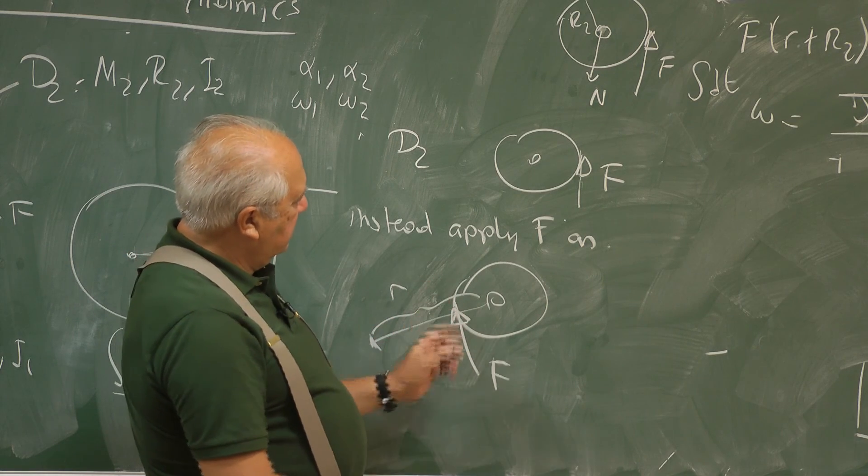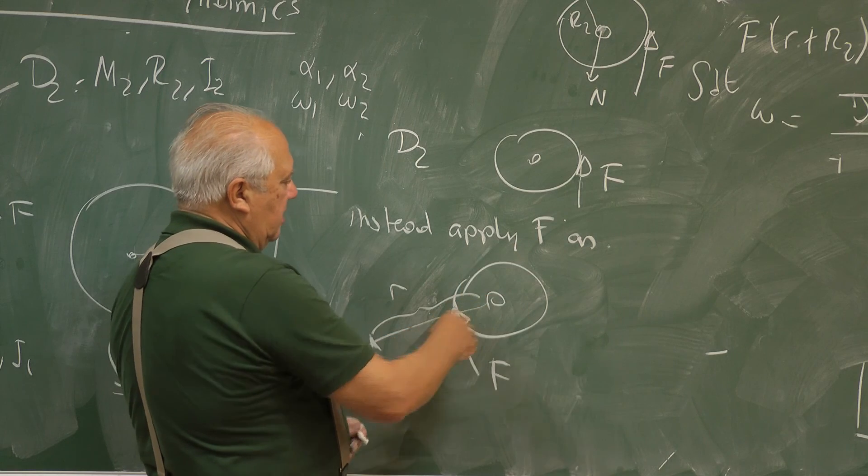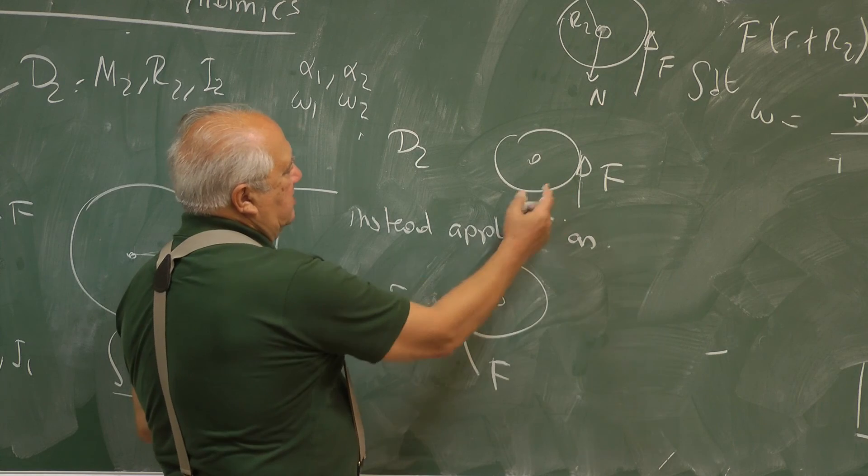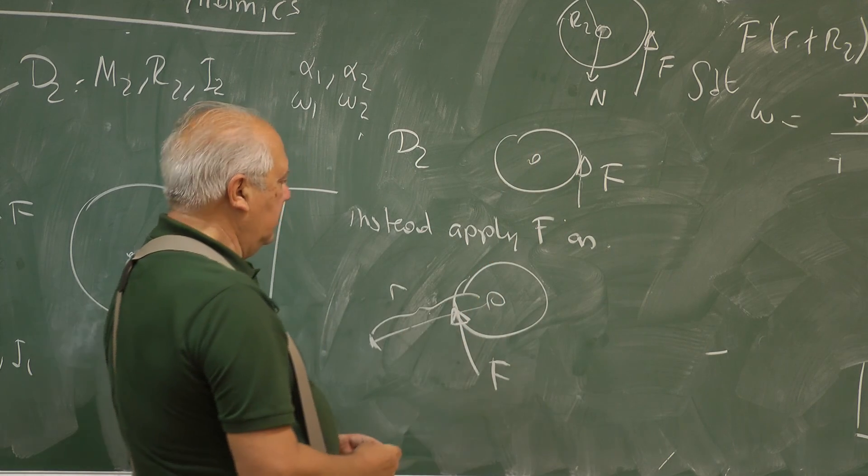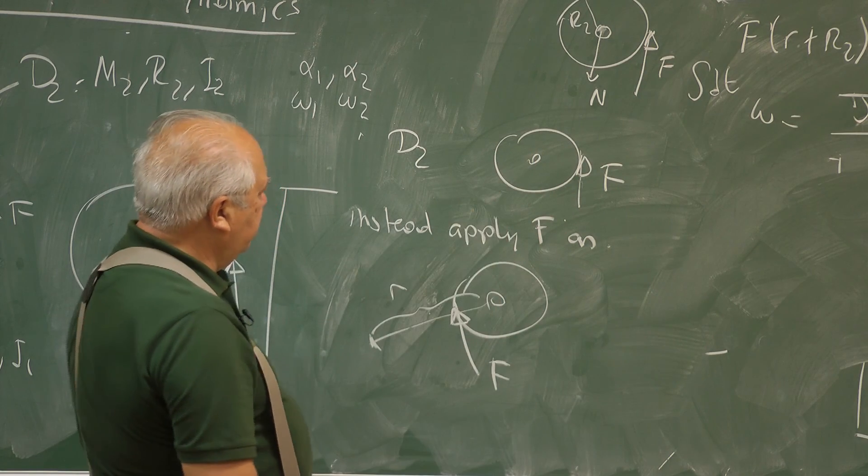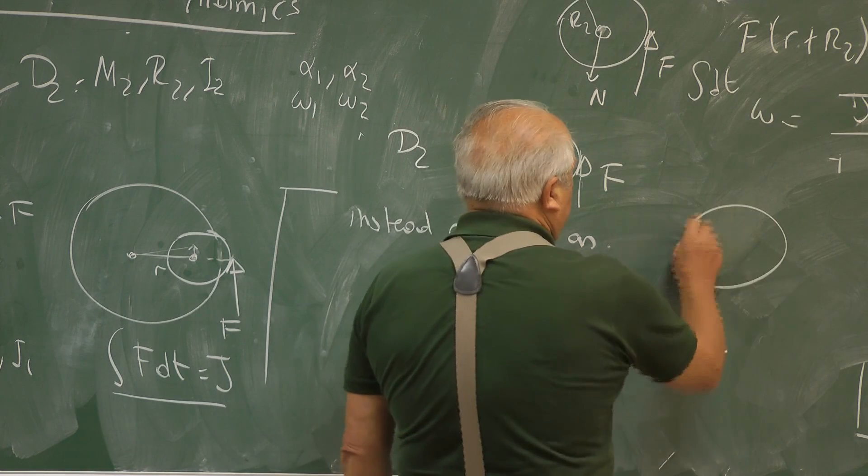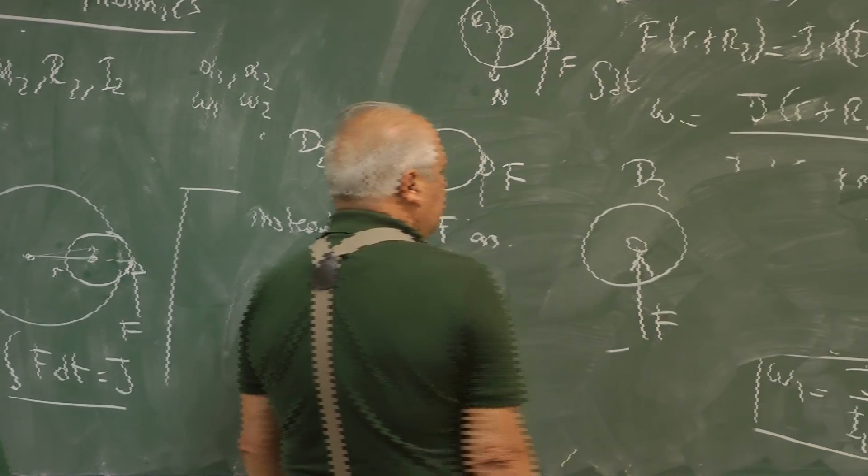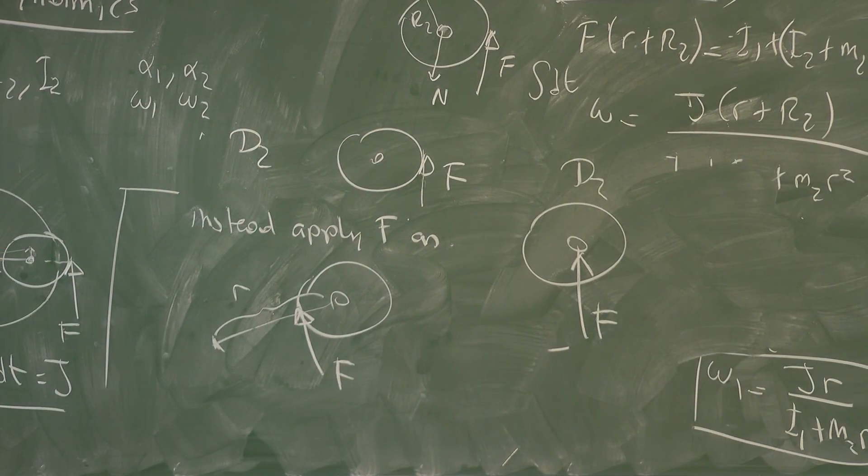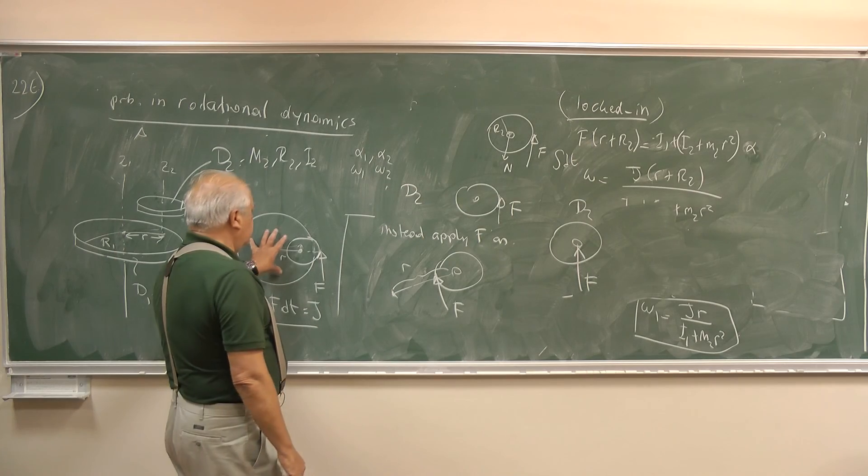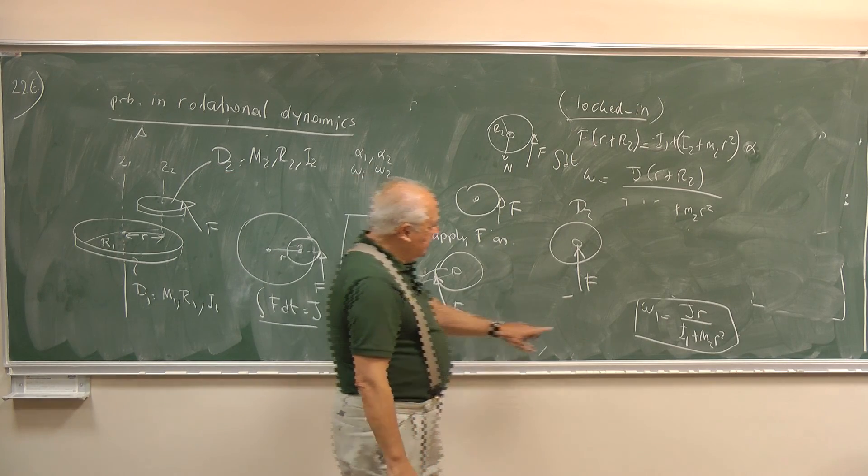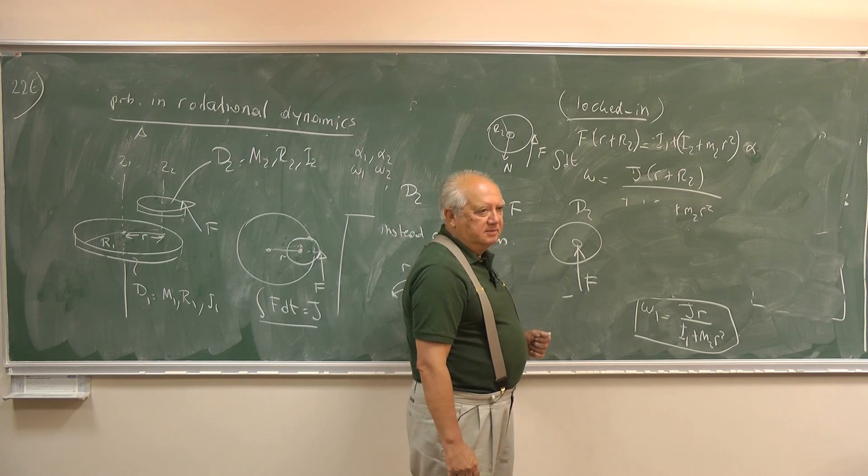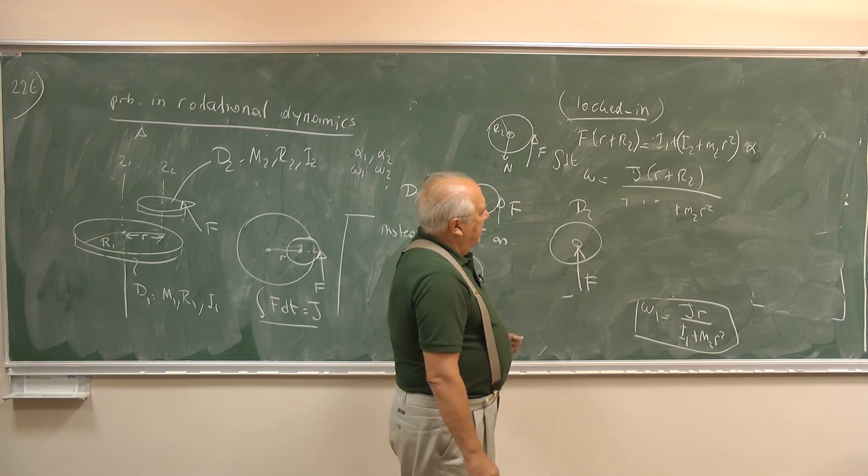But the rotation of the small disk is affected with the same angular velocity. In this case turning in a left-handed way and in this one turning in the right-handed way. How about if I apply the force directly to the, this is D2 again. What about if I apply the force directly to here? Again, the rotation, omega 1 will be the same, but this time D2 will not rotate at all.